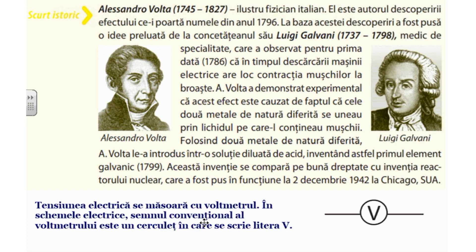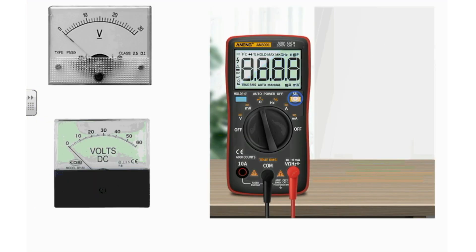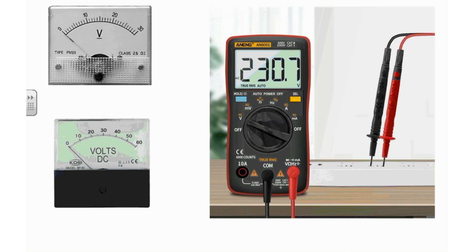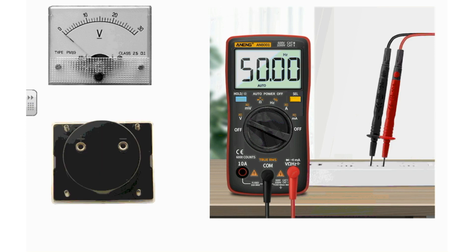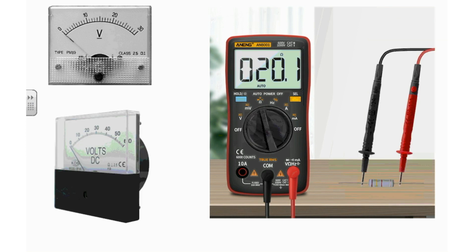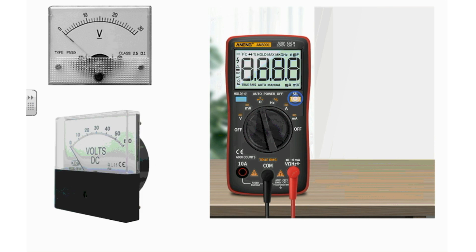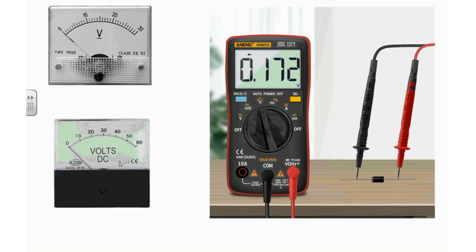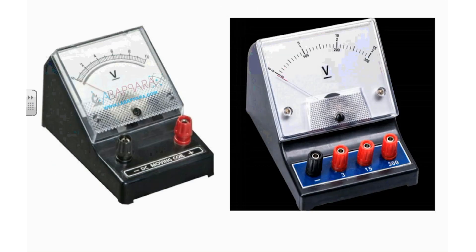Tensiunea electrică se măsoară cu voltmetrul. În schemele electrice, simbolul convențional al voltmetrului este un cerculeț în care se scrie litera V. În imagini aveți câteva tipuri de voltmetre: voltmetre cu scară, voltmetre digitale, și multimetre care pot măsura atât intensitatea curentului, cât și tensiunea. Pentru a folosi un voltmetru cu scară și pentru a putea citi corect indicațiile de pe el, trebuie să respectăm aceleași reguli ca și în cazul ampermetrului.